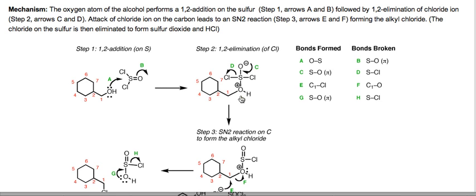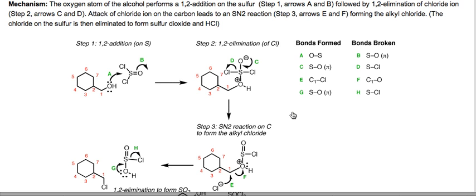When we draw the products of this addition, we see a single bond between sulfur and oxygen. Now a lone pair from oxygen can come down and reform a sulfur-oxygen double bond, displacing one of the good leaving groups — chlorine, which is a weak base and a great leaving group. This reaction is called a 1,2-elimination, a reaction type you'll encounter with esters and acid chlorides later in Org 2. That covers arrows C and D.